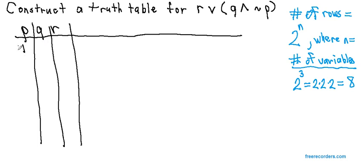Our first column is going to be four T's followed by four F's. The second column is going to be two T's, two F's, two T's, and two F's.